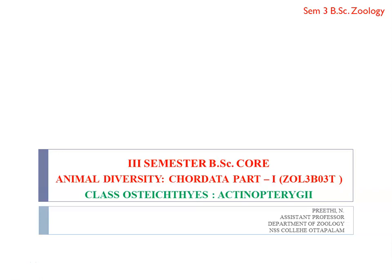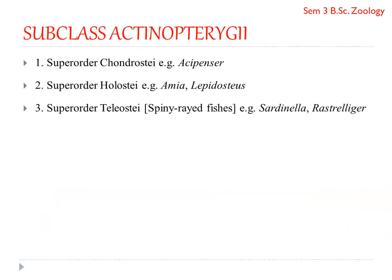We are moving on to the next subclass, that is subclass Actinopterygii, a class of Osteichthyes. This is considered to be the advanced group under the class Pisces. These are what we are supposed to learn as per your syllabus — the three superorders. Initially, we need to learn the characteristic features of subclass Actinopterygii and then the salient features of the three superorders under that.